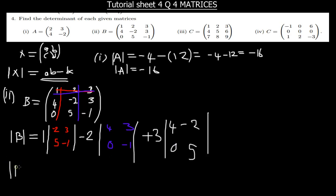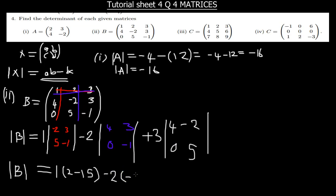Finding the determinant of each minor: for the first one — negative 2 times 1 gives 2, and 3 times 5 gives 15. For the second minor — 4 times negative 1 gives negative 4, minus 0 times 3 gives minus 0. Then for the third minor — 4 times 5 gives 20, and 0 times negative 2 gives 0.